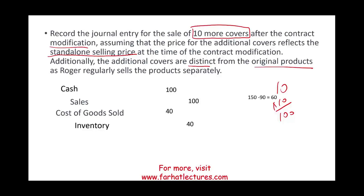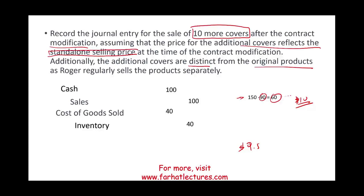Now we are going to change the scenario. When does the $9.50 price kick in? Remember, we had 150 units originally and sold 90, leaving 60 units. As long as we are selling those 60 remaining units, we keep selling them at $10, because under the standalone assumption the additional covers have nothing to do with the old contract — they're independent. So the $9.50 kicks in when we sell that 151st unit, then we have the new price.